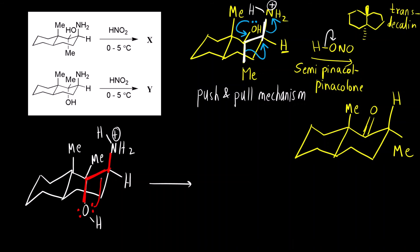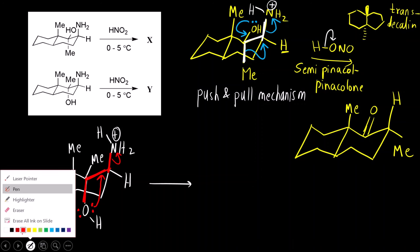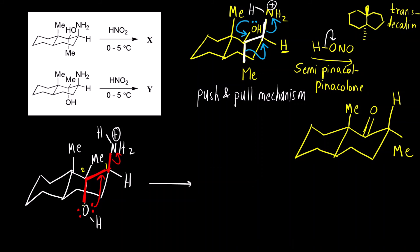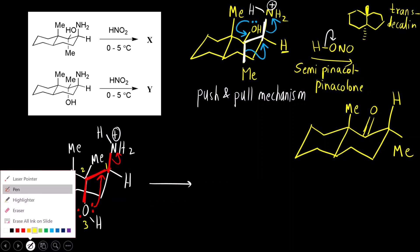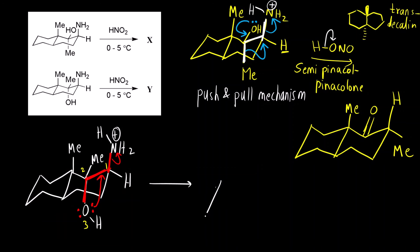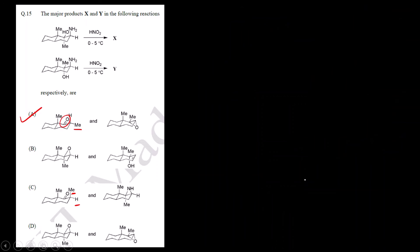Now the thing is that this will attack here and this will go away as a good leaving group. We will get a formation of an epoxide ring. You can see one, two and third member is this oxygen. Three-membered ring is formed. What will be the final product now? It will be epoxide that is going to form. Methyl. And now the epoxide is formed like this. This is going to be the final product. You can see here the same product we have got that is option, correct answer here it is option A.